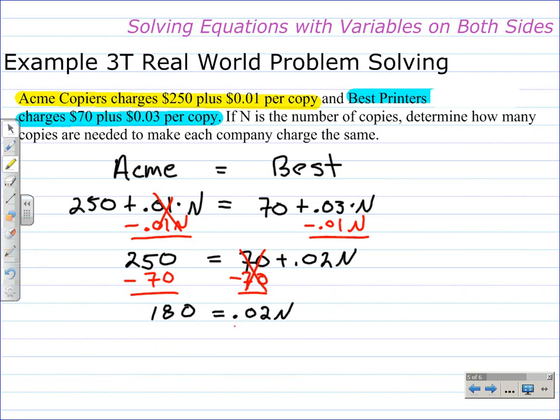Next, we'll divide both sides by .02. When we do that, that leaves us with the variable on the right by itself. And 180 divided by .02 is 9,000. So what this solution means is that the companies are going to charge the same amount when 9,000 copies are ordered.